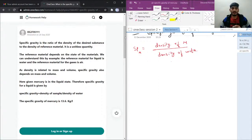That is true. As density is related to mass and volume, specific gravity also depends on mass and volume. Here given mercury is in liquid state, therefore specific gravity for a liquid is given by specific gravity equals density of material over density of water.